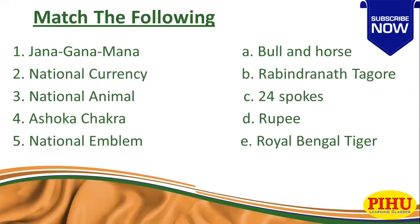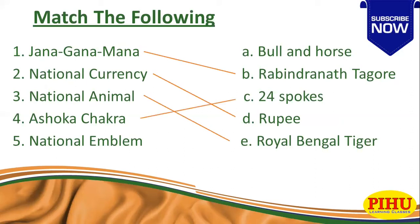Match the following. Number 1: Jan Gana Mana was composed by Rabindranath Tagore. Number 2: National Currency — that is Rupees. Number 3: National Animal — that is Royal Bengal Tiger. Number 4: Ashok Chakra — which includes 24 spokes. And number 5: National Emblem — which includes bull and horse.